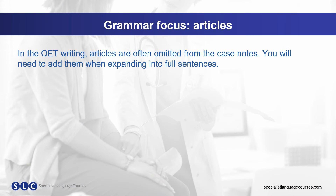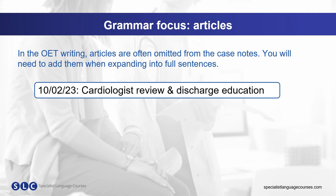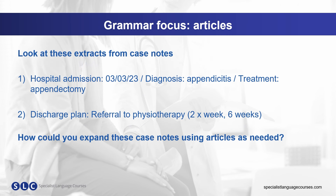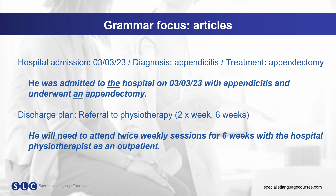Now let's look at how we use articles in OET writing. In the OET writing task, articles are often omitted from the case notes. You will need to add them when expanding into full sentences. For example, this is what the case notes might look like — not in full sentences and missing articles. This could be written as: he was reviewed by the cardiologist on the 10th of February and received discharge education. Now your turn — how could you expand these case notes using articles as needed? Pause the video and type your answers into the comments. Here are some possible ways: He was admitted to the hospital on the 3rd of March with appendicitis and underwent an appendectomy. He will need to attend twice weekly sessions for six weeks with the hospital physiotherapist as an outpatient.